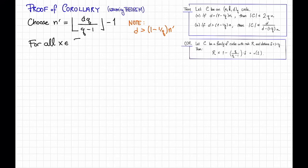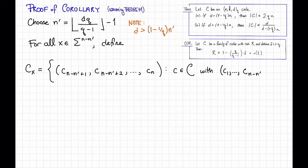Now, for all x in sigma to the n minus n' prime, let's define a new code, c sub x, which is equal to the set of vectors c, n minus n' prime plus 1, c, n minus n' prime plus 2, dot dot dot up to cn, such that c is a code word in our original code, so that the first part of c, that is c1 up to c n minus n' prime, is equal to x. That is, c sub x is the set of ends of code words in c, so that the beginnings are equal to x. So these are the last n' prime symbols, and these are the first n minus n' prime symbols.